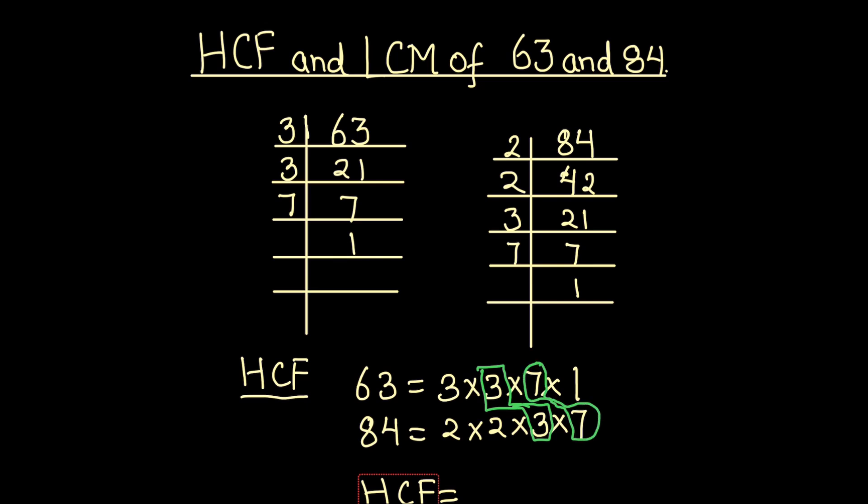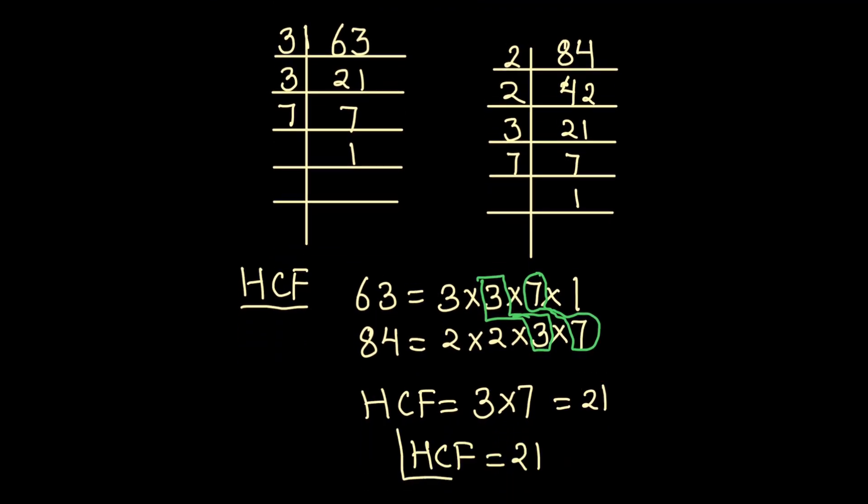So HCF will be the product of these common factors. So 3 times 7 will be the HCF of 63 and 84 which is 21. So HCF is 21.